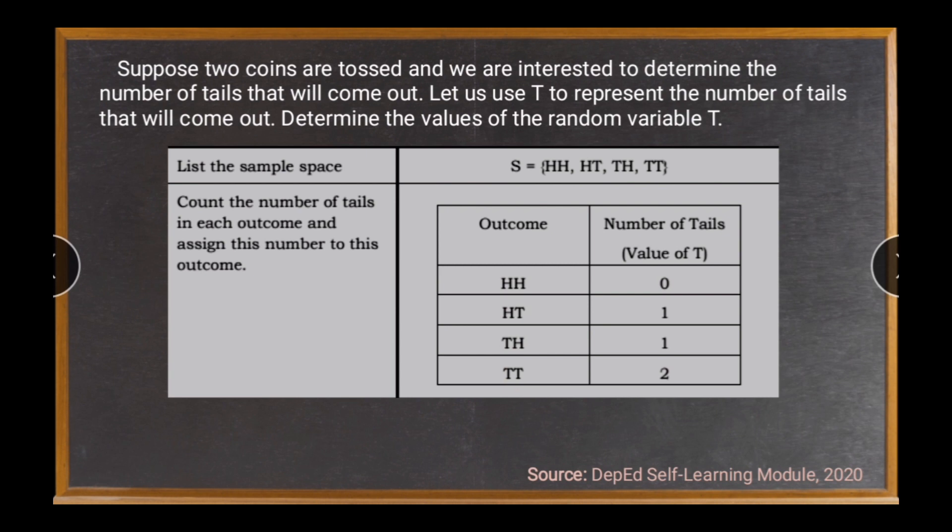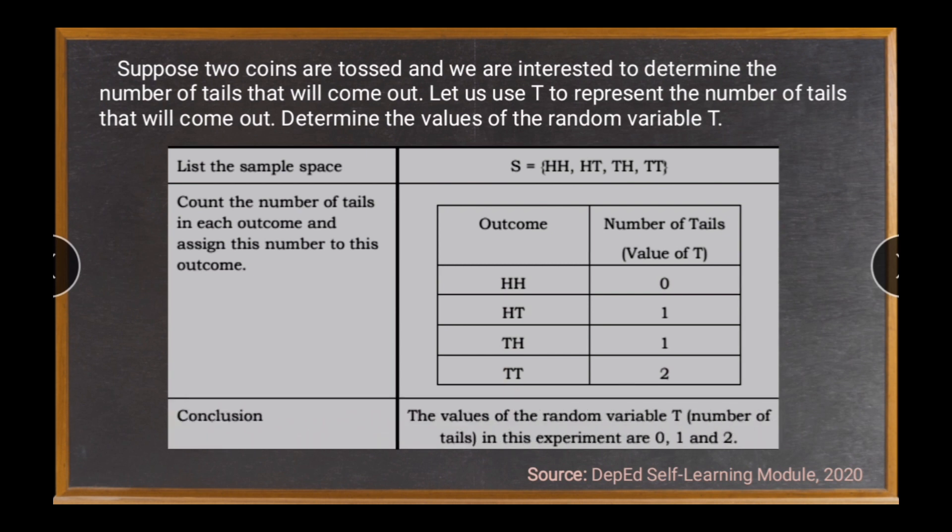And finally, for our conclusion, the values of the random variable T, number of tails in this experiment are zero, one, and two.